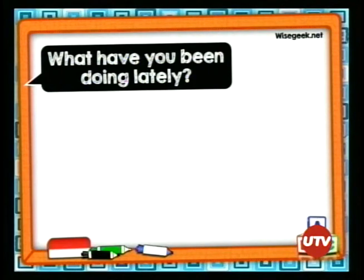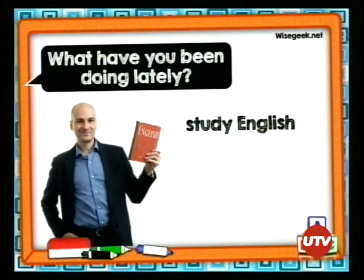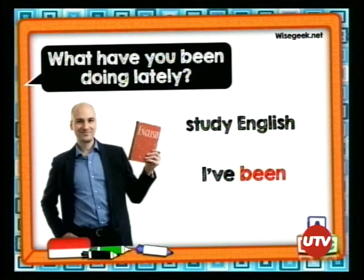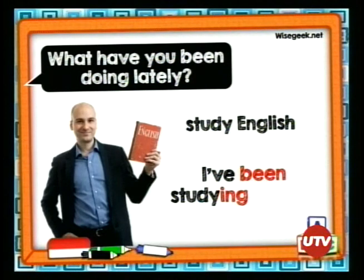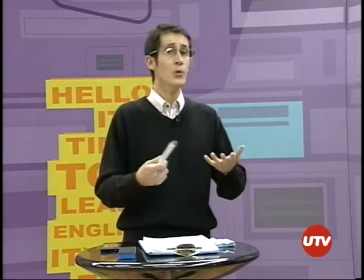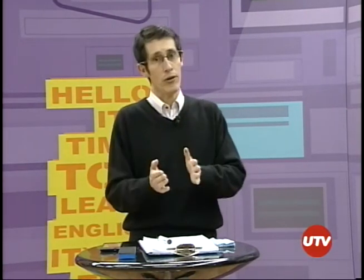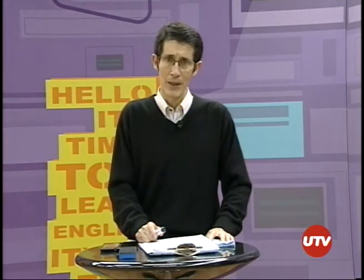La misma pregunta: What have you been doing lately? — ¿qué has estado haciendo últimamente? Dice: he estado estudiando inglés. I've — que es I have, yo he — luego viene el verbo been — I've been — yo he estado. Luego el verbo study le añadimos el ING: I've been studying English — he estado estudiando inglés.